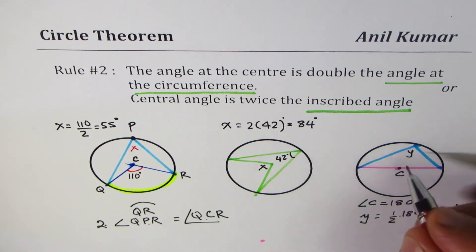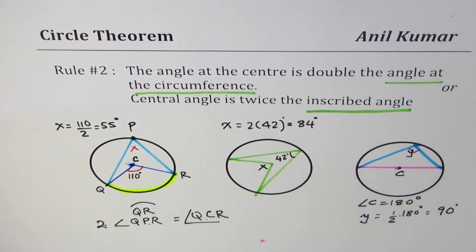So always, in a semicircle, this angle at the circumference will be 90 degrees. So I hope you find it interesting.